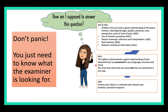For AO3, demonstrate a good understanding of how ideas and themes are presented — this is the poet's method: the way they get their big ideas across, how they present a speaker, how they reflect a theme. That involves language, structure, and form. You must show you know why something has been presented in that way. For AO4, think about how you write your response — presenting ideas in a coherent and relevant way, and developing a personal response in relation to the question.